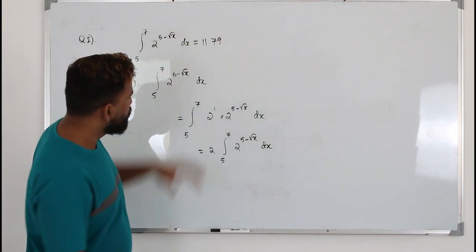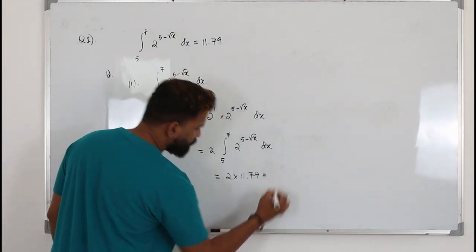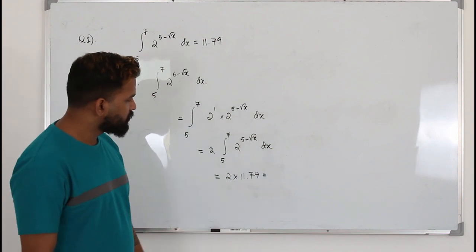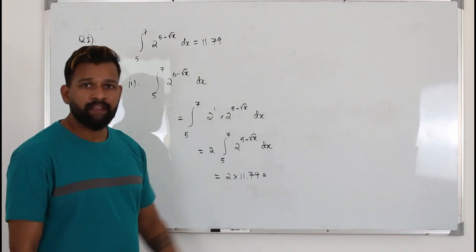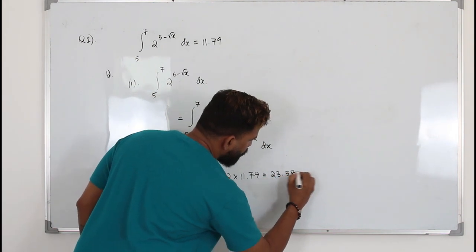Now you see we have this integral here. Replace it with 11.79, you will have 2 times 11.79. That's the answer. So you just multiply. That's the answer. So you get 23.58.